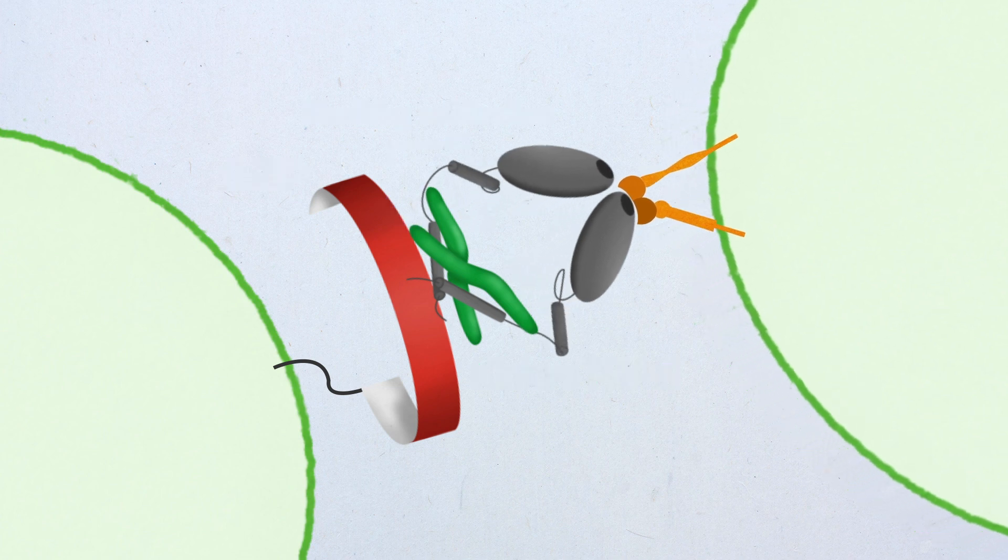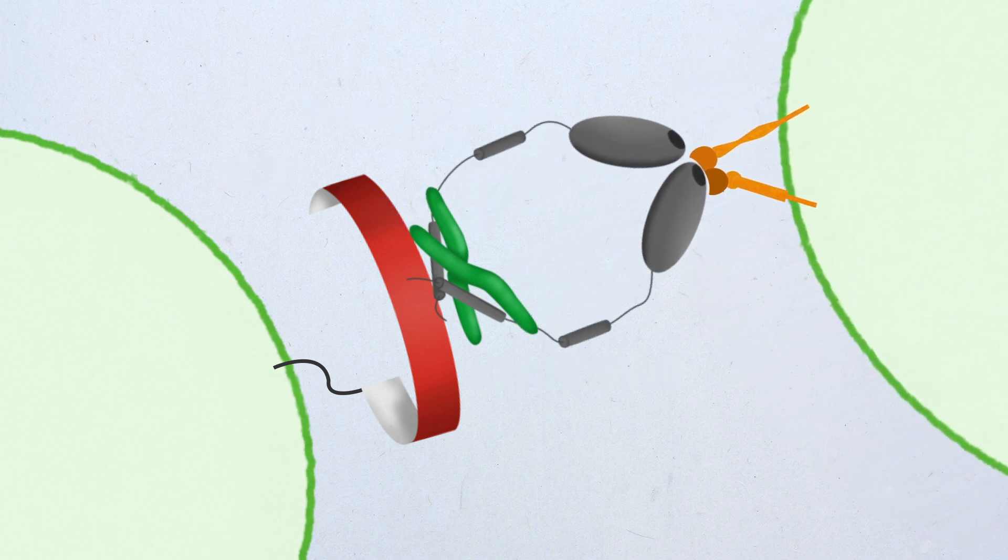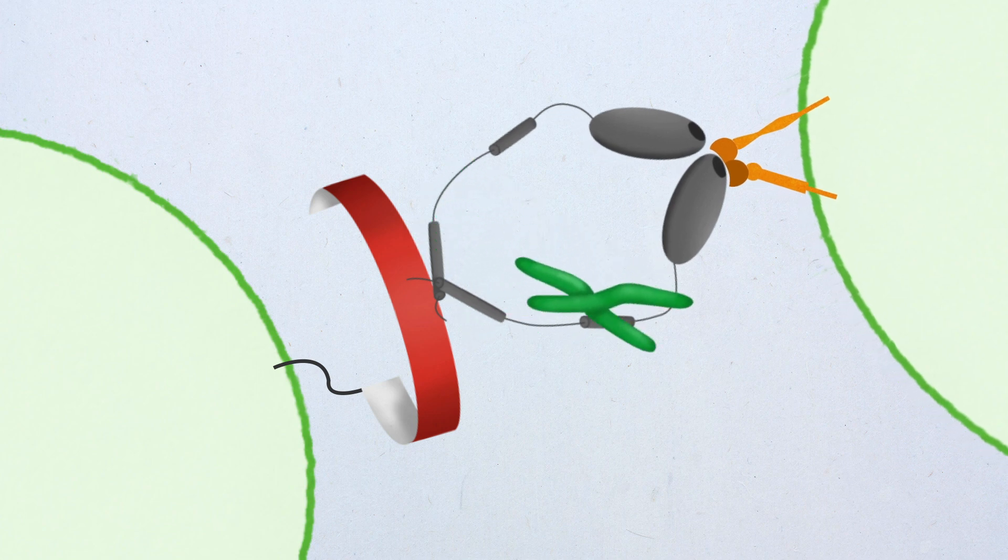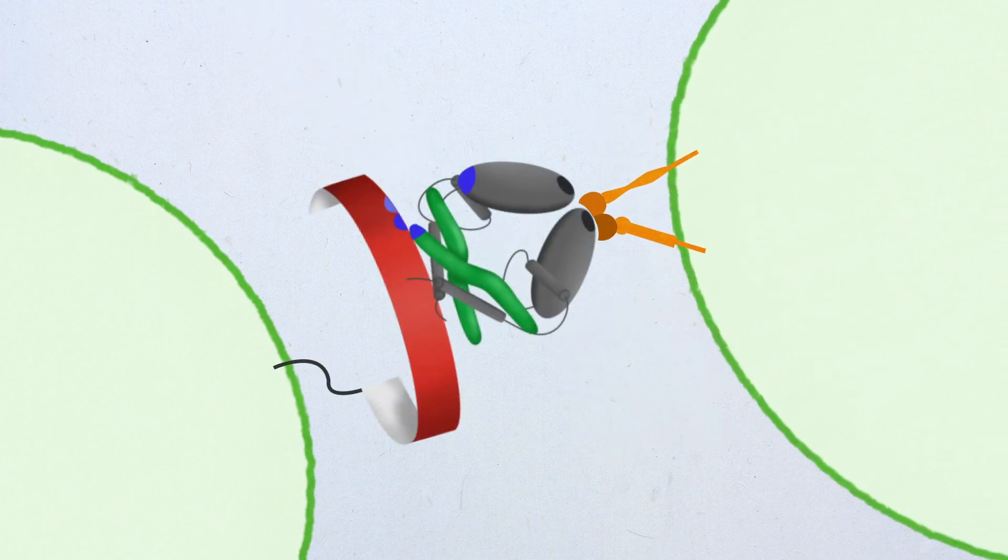Together, these structural and mechanistic insights illustrate the feasibility of blocking TGF-beta activity emanating from a precise, restricted cellular source, such as the surface of Tregs.